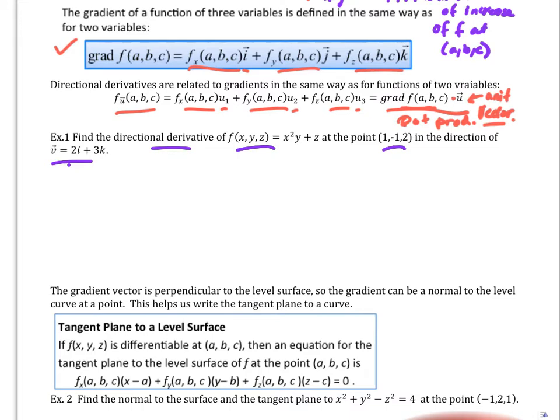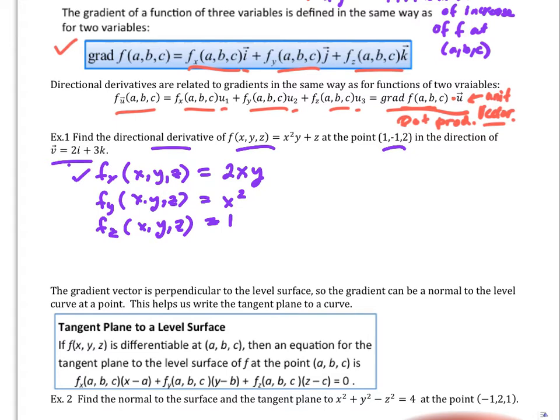So what we do first of all is we find the partials. So go ahead and find the partials with respect to x with respect to y and with respect to z. So my partial with respect to x is 2xy and then for partial with respect to y is x squared and then my partial with respect to z is 1.